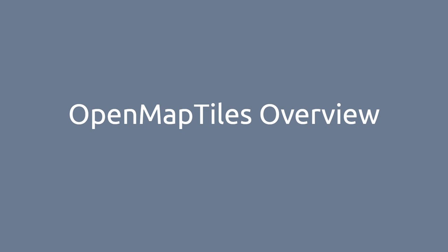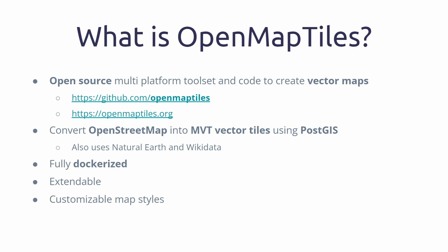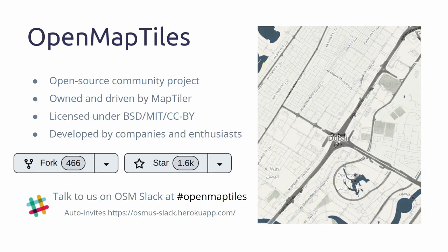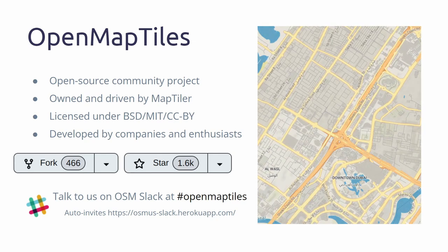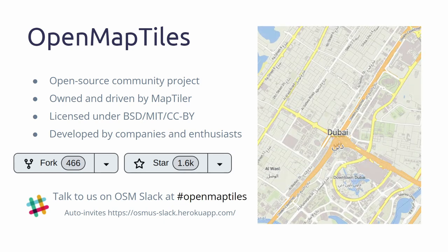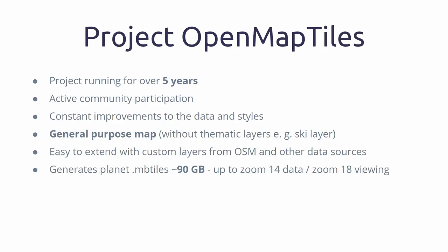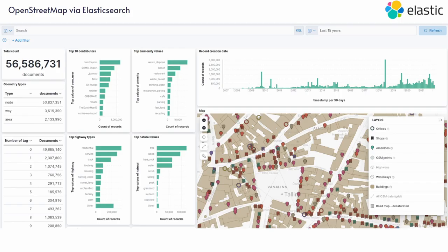OpenMapTiles overview — now I'm going to go deeper into the actual project. It's an open source platform with lots of support, Dockerized — there are a lot of goodies there. One of the best indicators of the success of the project are the fork and star indicators on GitHub. They're used by a lot of different customers and companies, including Elastic where I work. It's been running for over five years. There is active community participation, constant improvement, constant iteration, and lots of wonderful tooling. In Elastic search, that map is based on OpenMapTiles to show buildings and all sorts of other things for in-depth analysis on the dashboard.